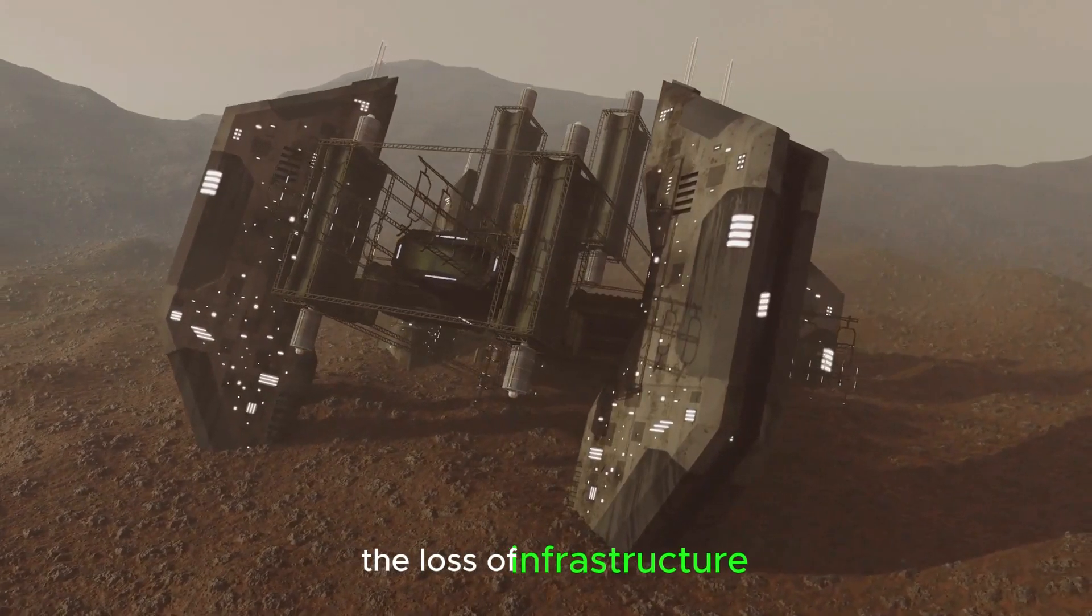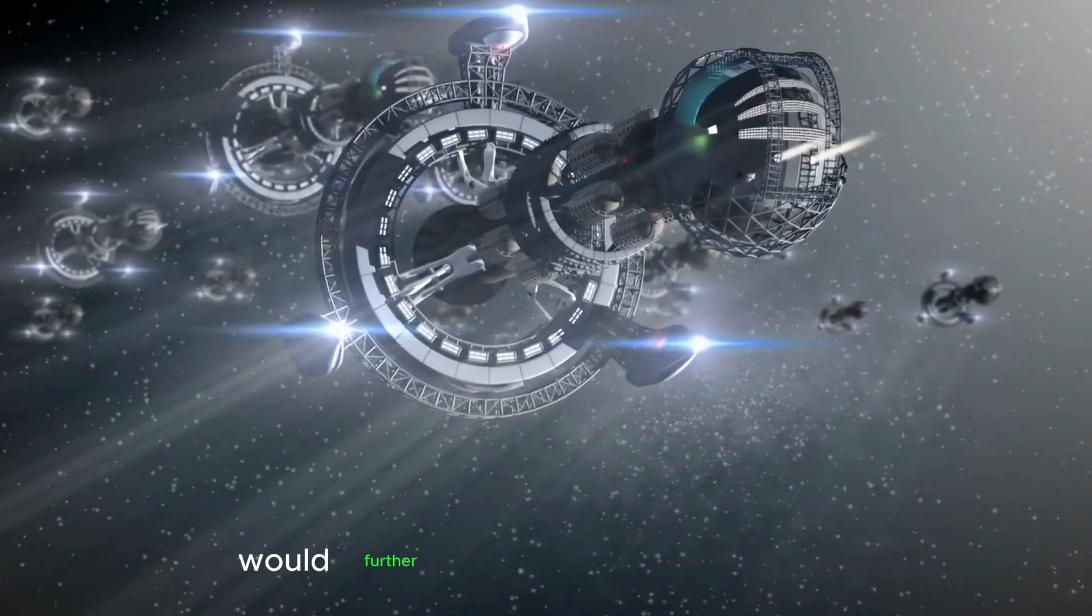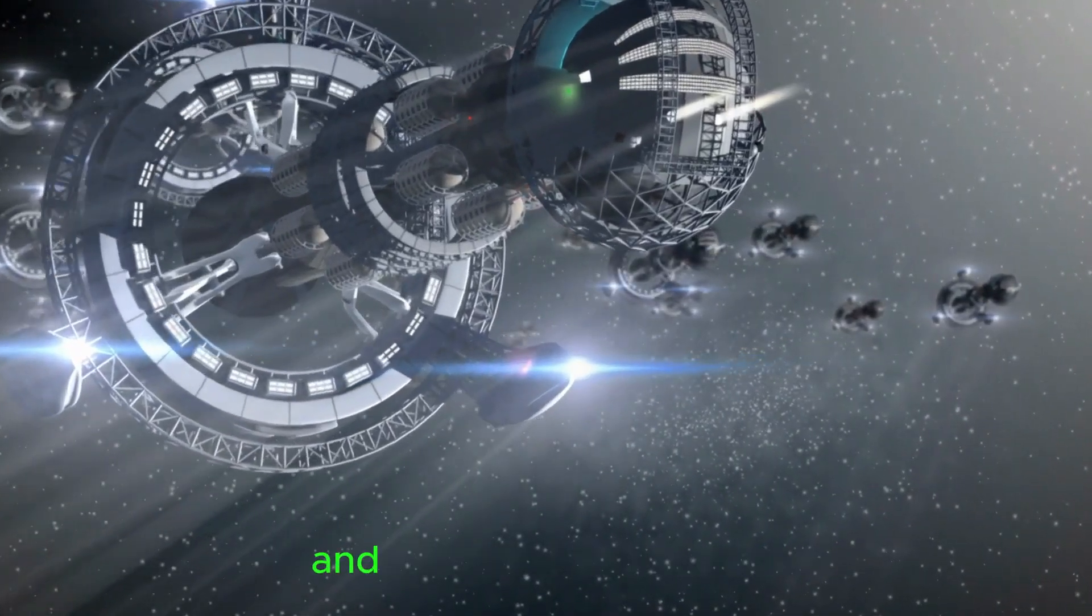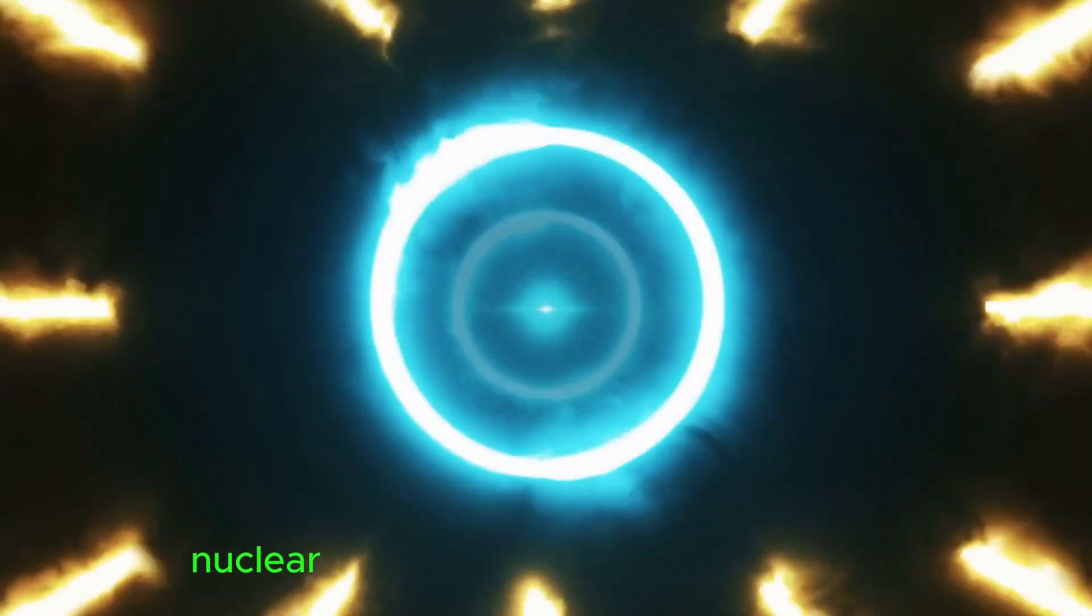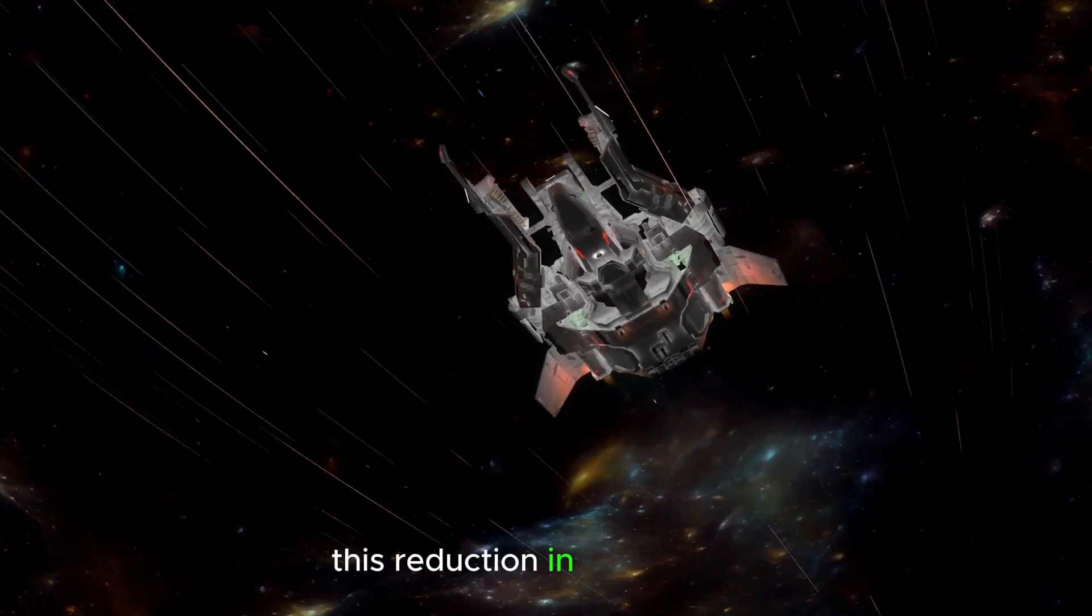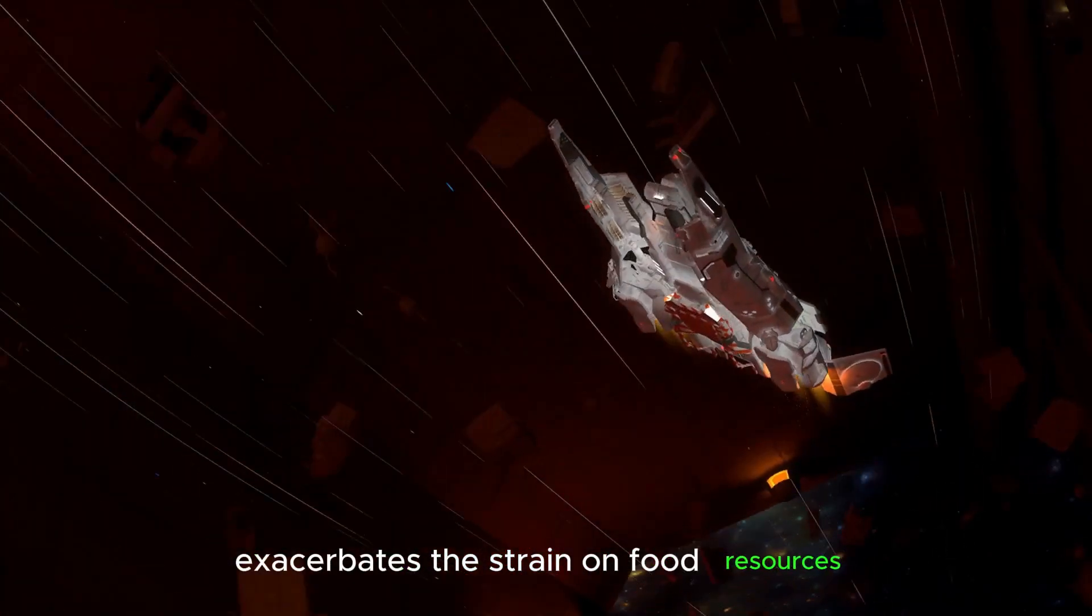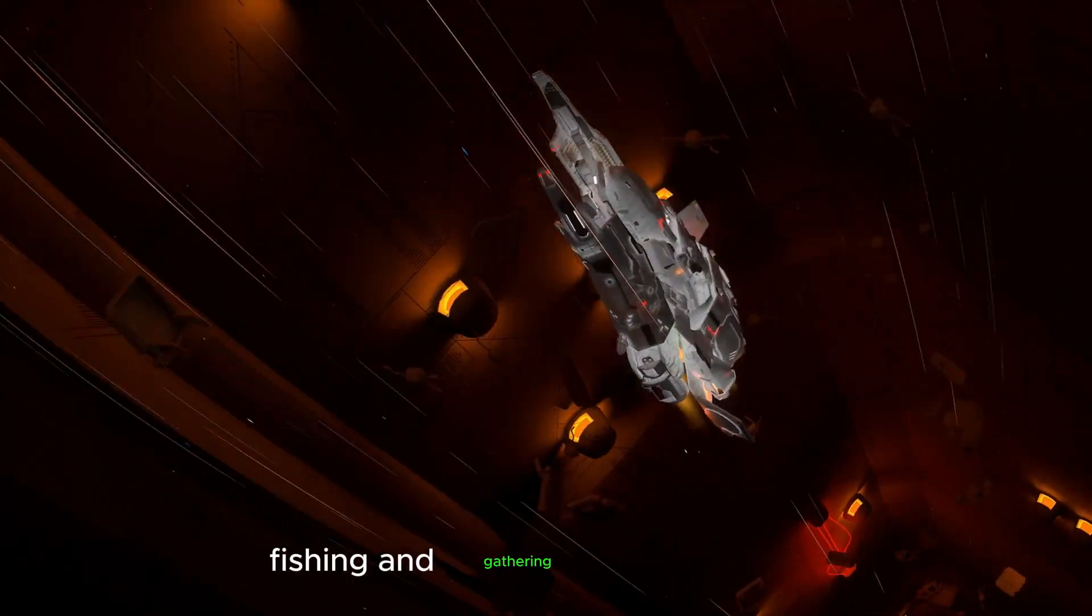The loss of infrastructure, including farm equipment, storage facilities, and transportation networks, would further impede efforts to cultivate and distribute food. In addition to the direct impacts on agricultural output, nuclear winter would also disrupt ecosystems and natural habitats, affecting wildlife populations and diminishing the availability of wild foods such as game, fish, and forageable plants. This reduction in biodiversity exacerbates the strain on food resources, particularly for communities reliant on hunting, fishing, and gathering for sustenance.